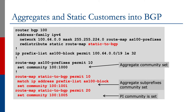Inside AS100, you have a sample BGP session. You have router BGP 100, and you're redistributing static routes using a particular route map called static-to-BGP. Note that this is an advanced configuration, and typically we would not redistribute statics into BGP. However, for this use case, because you have lots of customers with static routes that you'd like to announce, controlled redistribution makes it acceptable.